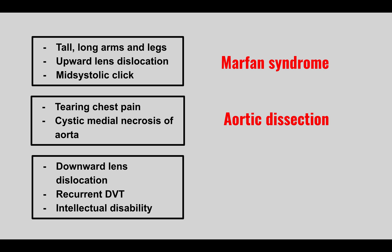The next condition is often compared to Marfan syndrome — they can have a similar marfanoid habitus, but with downward lens dislocation, recurrent DVTs, and intellectual disability. This is homocystinuria.